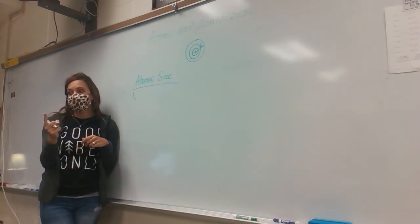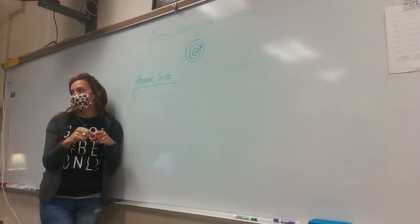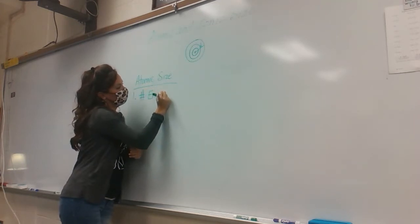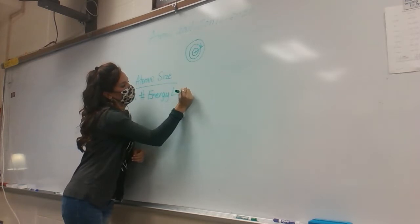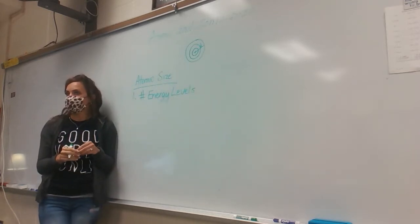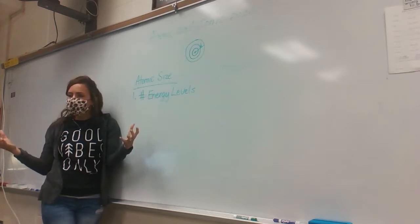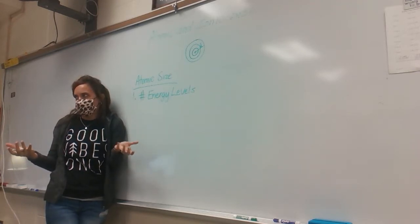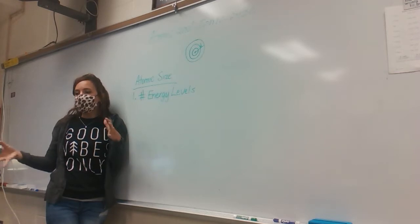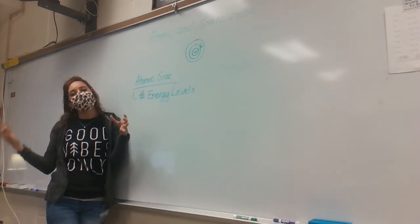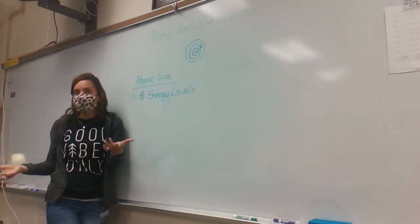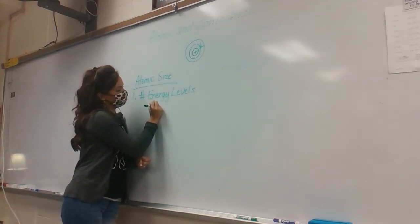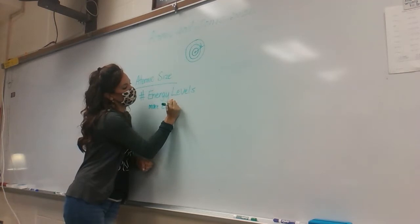The first and most important factor in determining atomic size is the number of energy levels. Just like layers in an onion, the more energy levels there are, the bigger the atom is. So if you're comparing two atoms and one has more energy levels than the other, the one with more energy levels is always bigger.